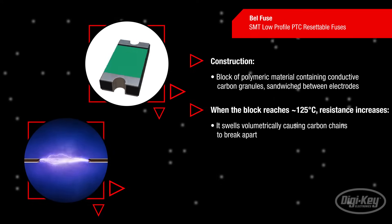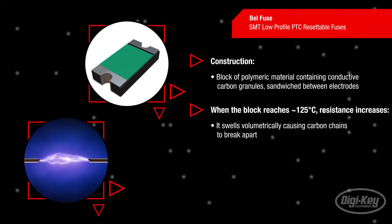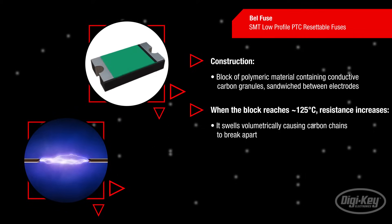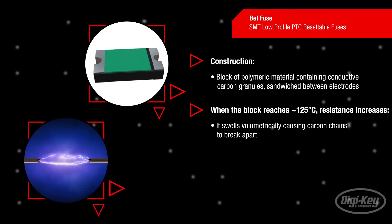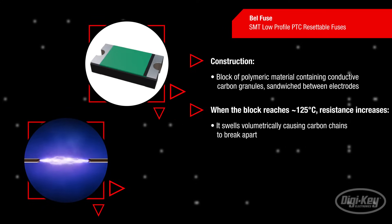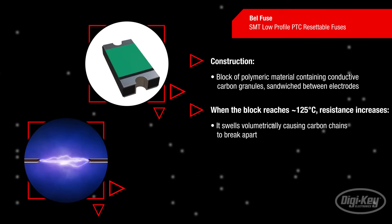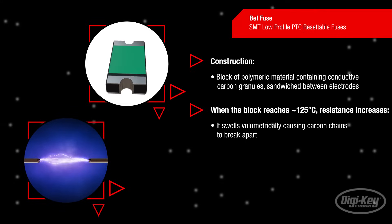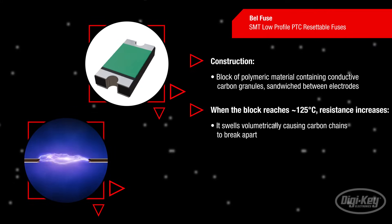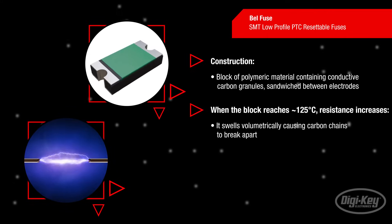When this polymer block reaches approximately 125 degrees Celsius, either due to current passing through it via conductive chains of carbon particles or due to an external heat source, it swells volumetrically. This expansion breaks apart a majority of the chains of carbon granules that run between the two conductive plates.